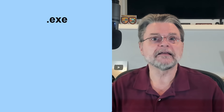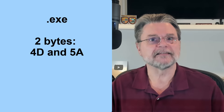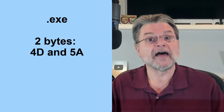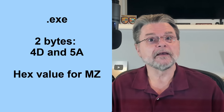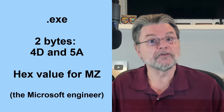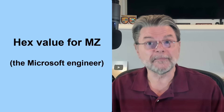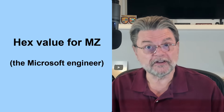A great example is the .exe file. All .exe files begin with two bytes, 4D and 5A. That's the hexadecimal, or just hex, value for the uppercase letters M and Z, which, as it turns out, are the initials of the Microsoft engineer who defined that original file format. If the first two bytes of a file are M and Z, then you're looking at a .exe file or one of its derivatives, like a .dll file. So, the approach to identifying is to examine the first few bytes of a file, and then use what we find there to see if we can determine the file format.